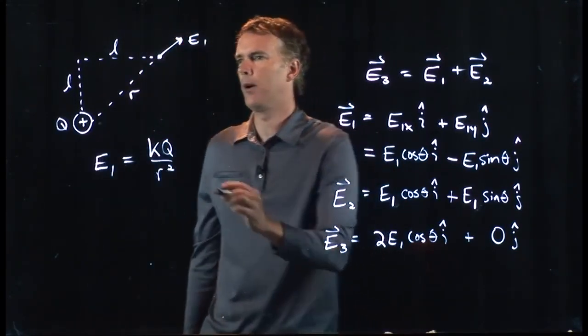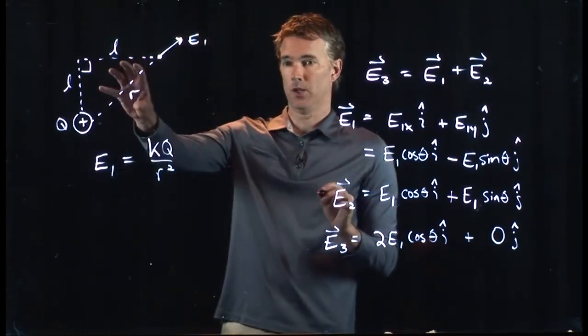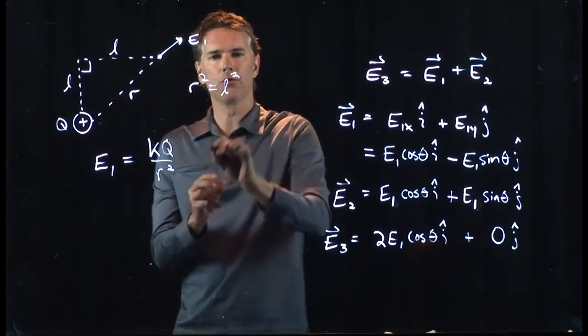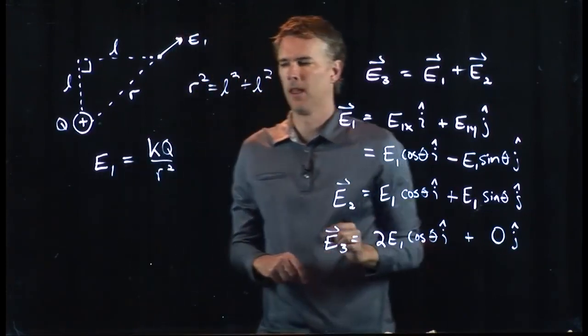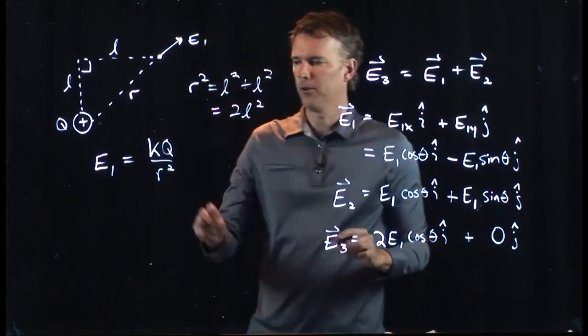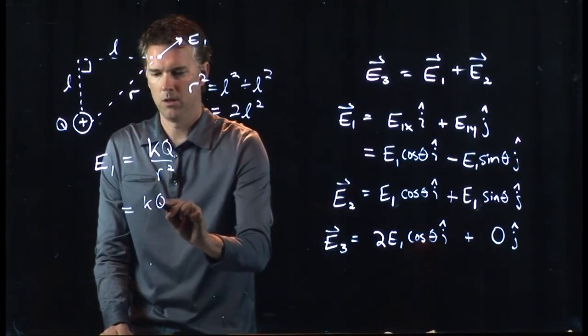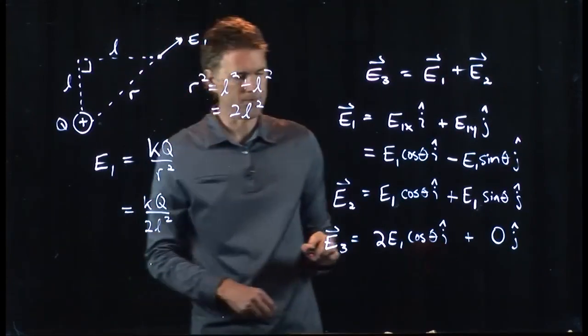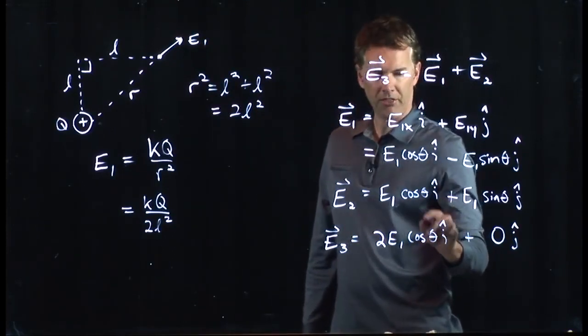Do we know R? Well, R is the hypotenuse of that triangle. That's a right angle. If that's a right triangle, then we know that R squared equals L squared plus L squared. Which is just 2L squared. And so I can put that in right here. This is KQ over 2L squared. And now we're almost there. We just need one little piece of information, which is theta.